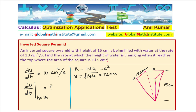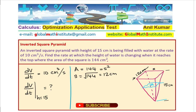Water is being filled, meaning the level rises from the bottom. At any instance, let's say the water is at some level. The height of the water at that instance is H, and we don't know the width of the square at that level — let's call it X. This also forms an inverted square pyramid.